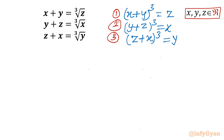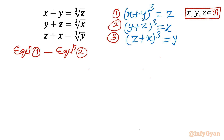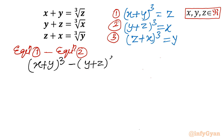Now I will perform one operation to find some conclusive result. I will consider equation 1 minus equation 2. So once I take equation 1 minus equation 2, the LHS would be (x+y)³ minus (y+z)³, equal to z minus x on the right-hand side.